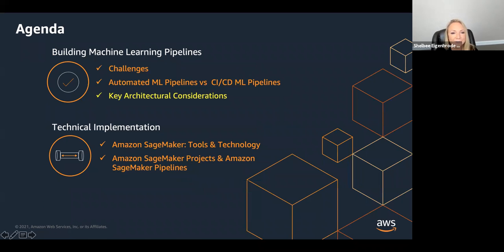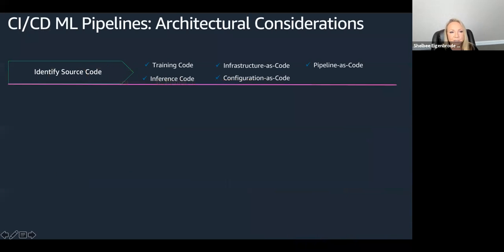Let's cover a few key architectural considerations. If we look back at that CI/CD pipeline from the previous slide and think about how we want to build out our own pipelines, what are some of the key considerations we need to think of when designing a CI/CD pipeline for our machine learning workloads? We'll cover a few of those here. The first thing is: identify your source code.